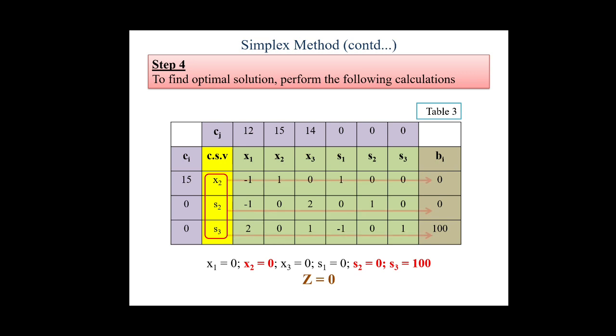These calculations for optimal solution will continue until we keep getting positive values in cj minus ej. As soon as we start getting 0s or negative numbers there, we will stop our iteration. And whatever Z value is there, that will be our final answer.